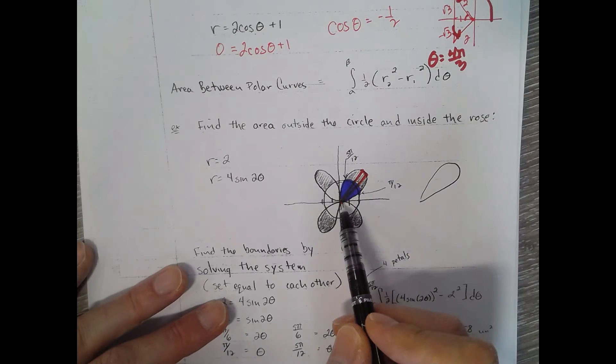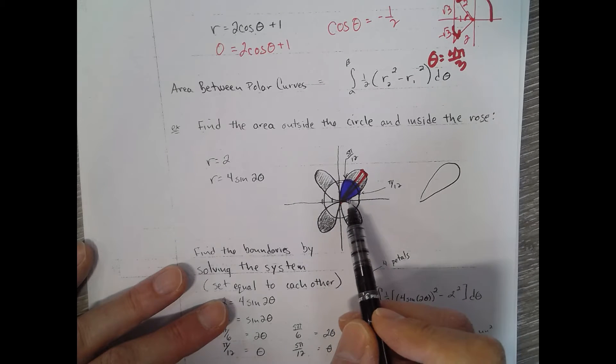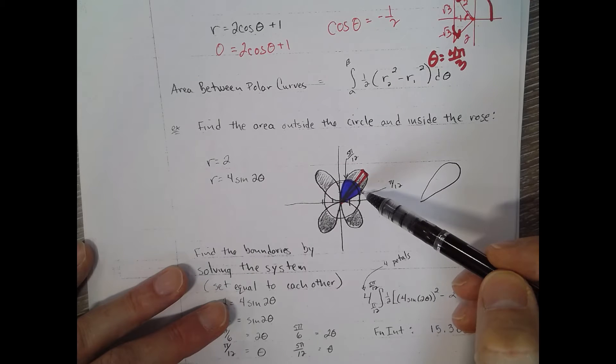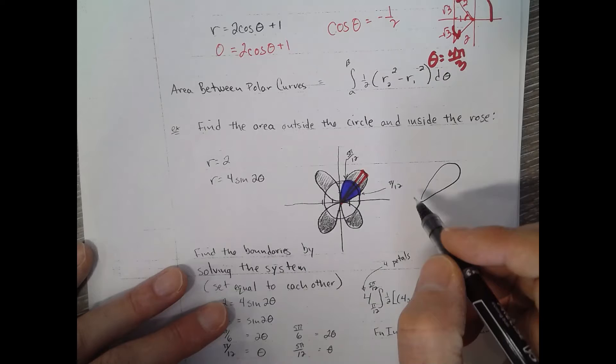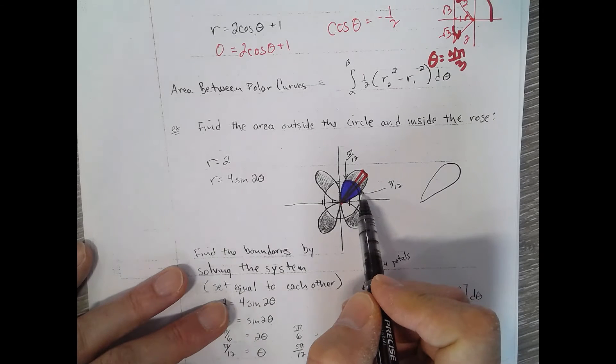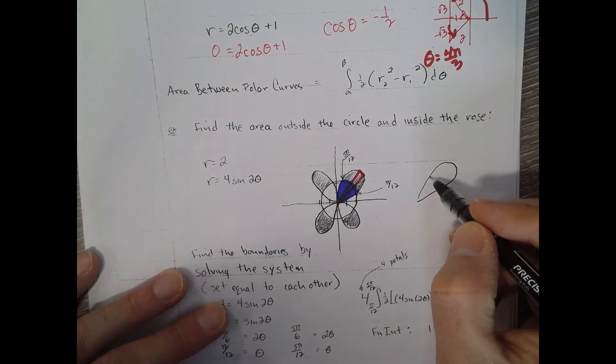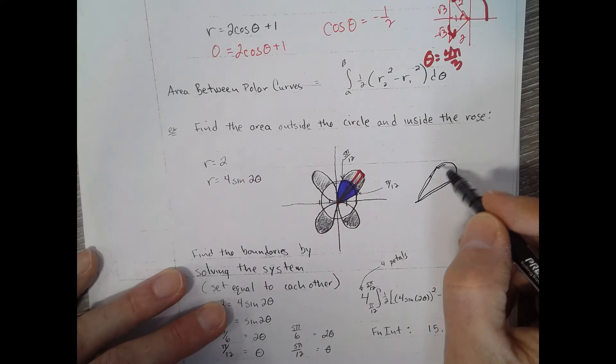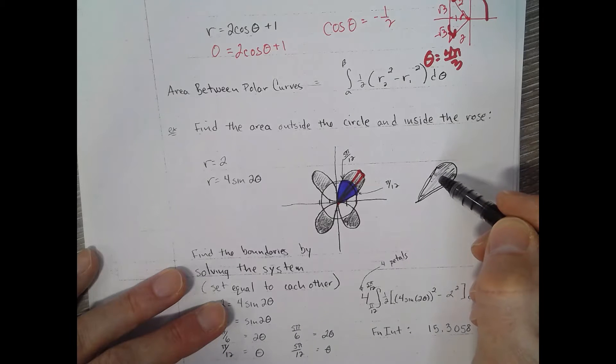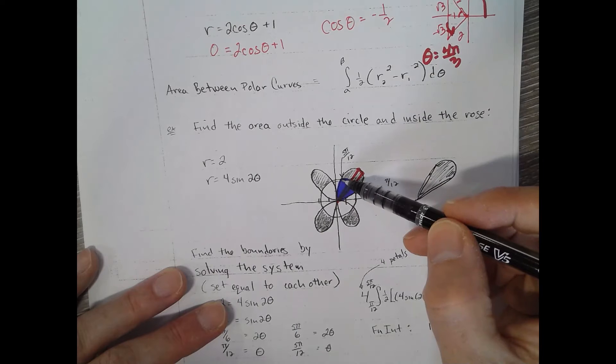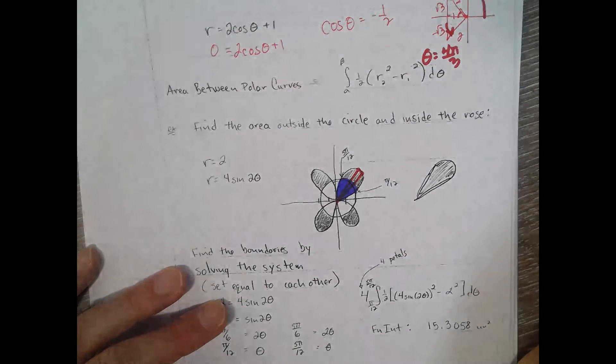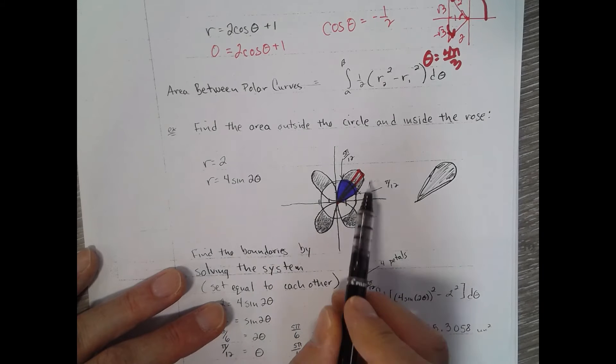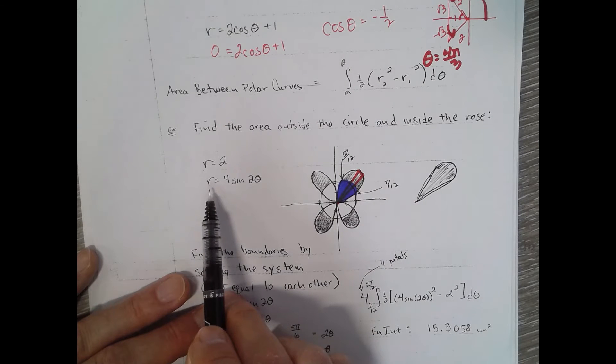We would integrate from here. Now would it be pi over 12 to 5 pi over 12? If we did that, we would only be getting the area starting from here to there. We'd be getting like this ice cream cone, but we would not be getting that little sliver here. So we're not going to go pi over 12 to 5 pi over 12. We're going to go probably 0 to whenever our next r equals 0, so that'd be pi over 2.